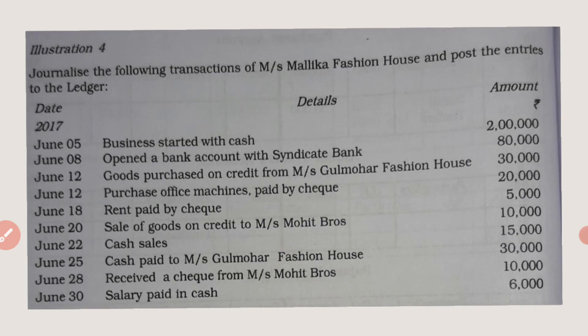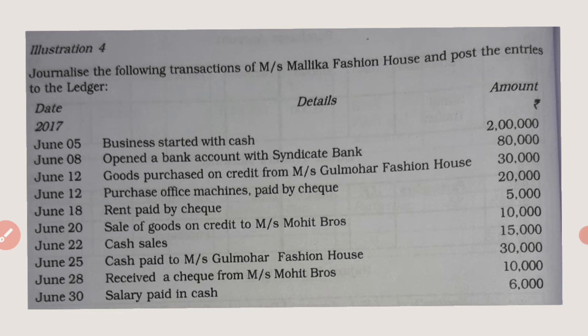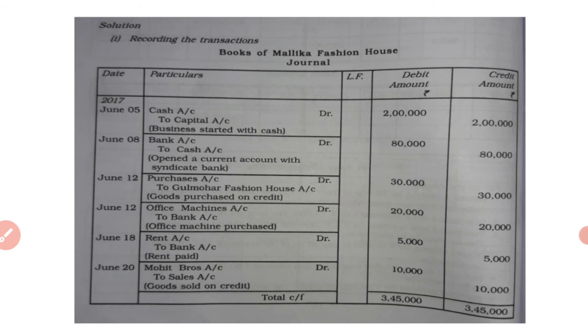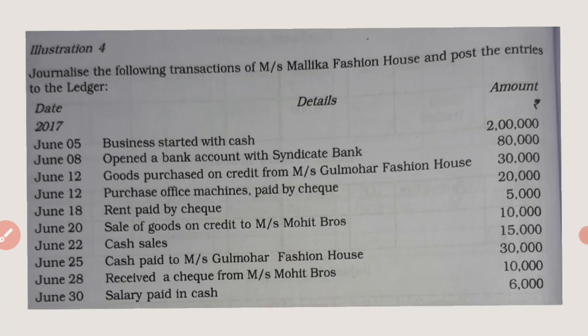Same date, June 12: office machines purchased paid by cheque — office machine account debited to bank account, debit 20,000, credit 20,000. Narration: being office machine purchased. June 18: rent paid by cheque 5,000 — rent account debited to bank account. Narration: being rent paid.